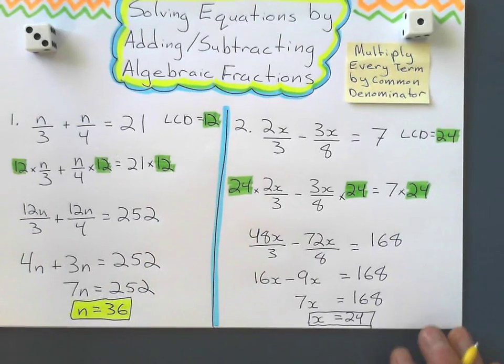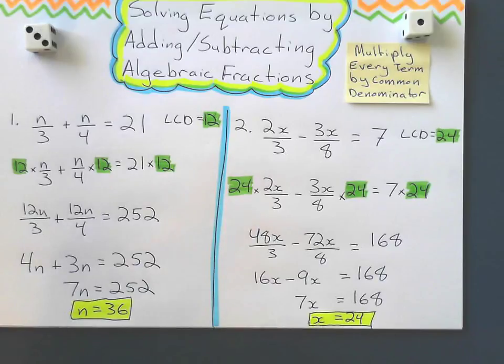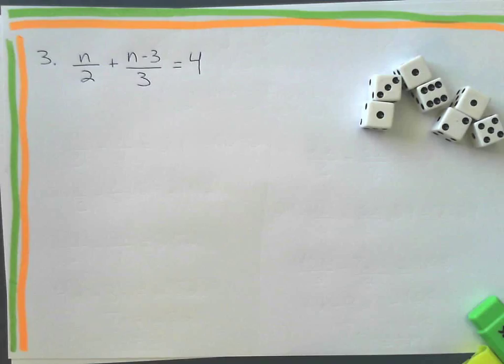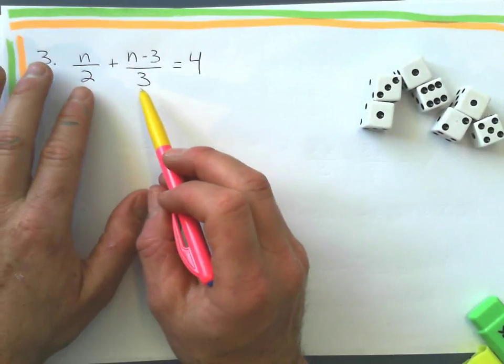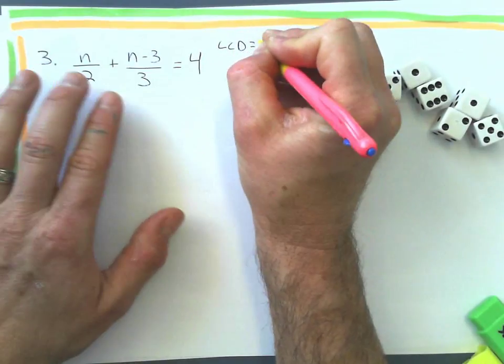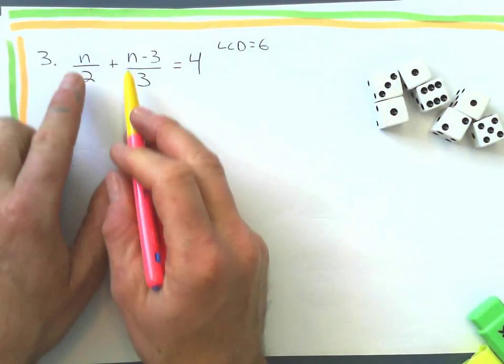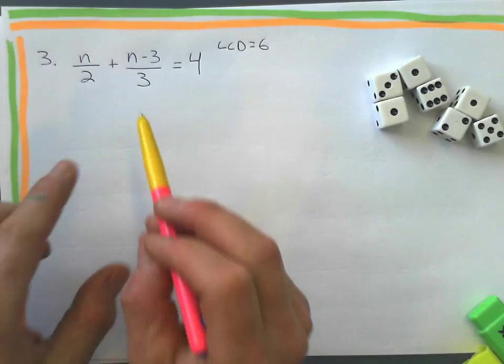So nothing too complicated yet. Let's look at some examples that might be a little bit more difficult. So here we go. This guy, 2 and 3, so least common denominator there is pretty easy to figure out, that's 6. So I'm going to multiply everything by 6 here.